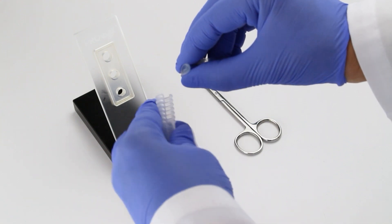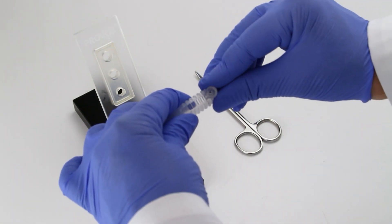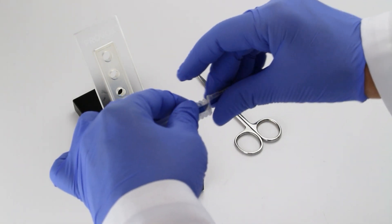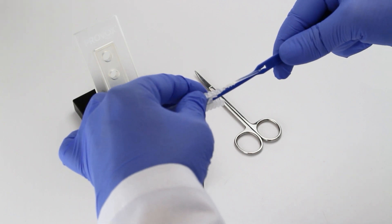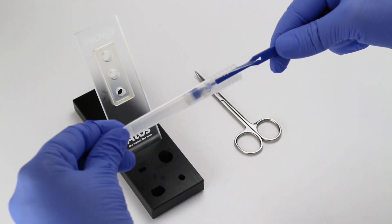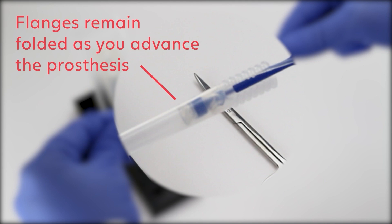Hold the loading tube with your other hand and insert the esophageal flange into the opening in the tube. It is important to keep flanges folded forward as you advance the prosthesis in the clear loading tube.